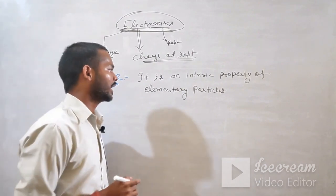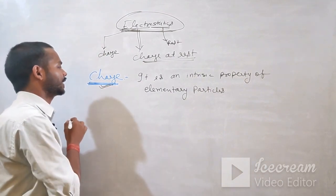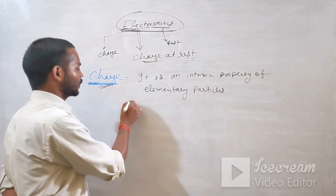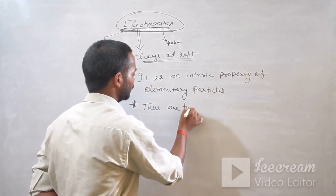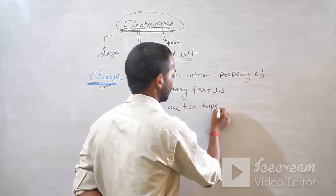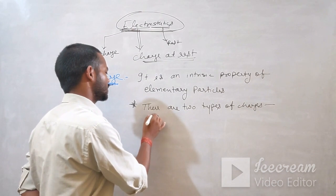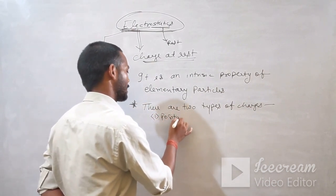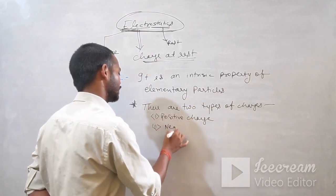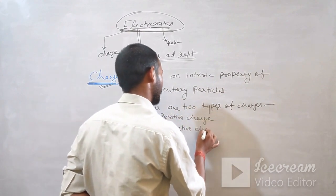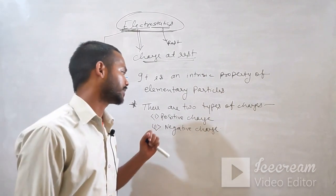Now, we have two types of charges. There are two types of charges. The first one is positive charge, and the second one is negative charge.